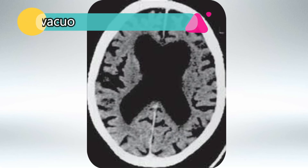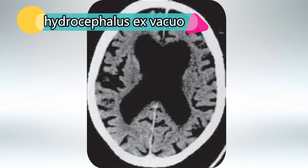On imaging of Huntington's disease, we'll see hydrocephalus ex vacuo, which presents like this. This means that there will be enlargement of the ventricles, or apparent hydrocephalus, which is caused by brain matter loss.